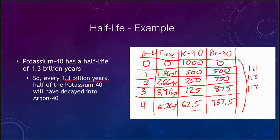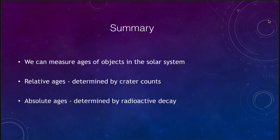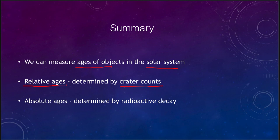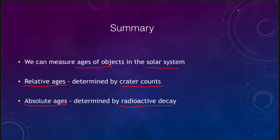In summary, we can determine ages of objects in the solar system. We talked about relative ages using crater counts — how many craters there are in different regions — which works for regions on a planet, moon, or between different solar system objects. We also looked at how we can determine absolute ages by examining the radioactive decay of minerals from rock samples brought back from an object's surface. That concludes our lecture on ages in the solar system. We'll be back again next time for another topic in astronomy.